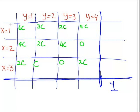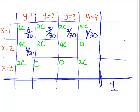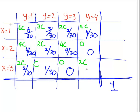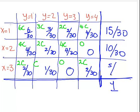Substituting c = 1/30, the cell values become: 6/30, 3/30, 2/30, 4/30, 4/30, 2/30, 4/30, 4/30, 0, 0, 2/30, 1/30, and 2/30. The marginal row totals are 15/30, 10/30, and 5/30 for x equals 1, 2, and 3 respectively.